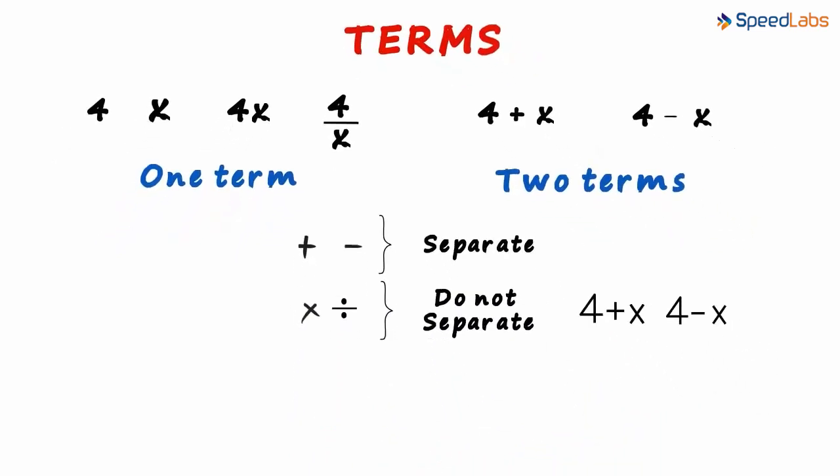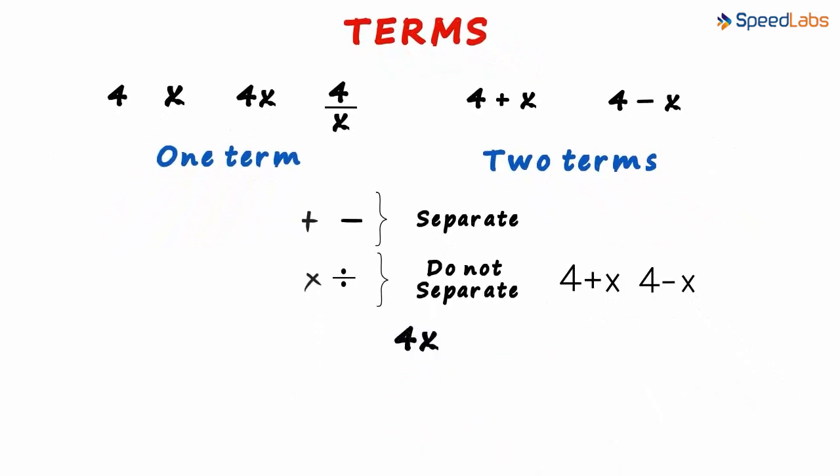Now let's analyze the term 4x. It is just one term, but it has a constant and a variable. The constant is called the coefficient of x. And this x, as we already know, is called the variable.